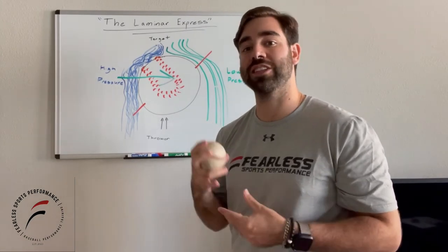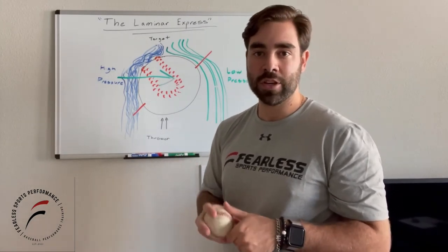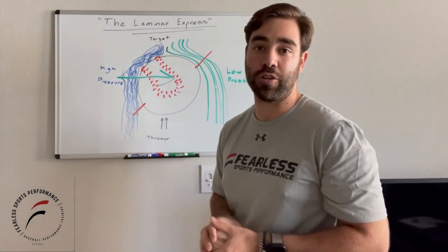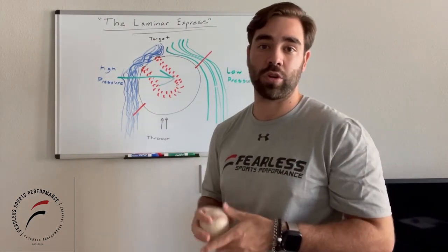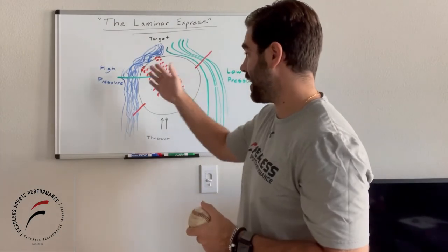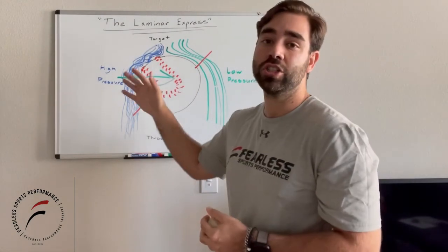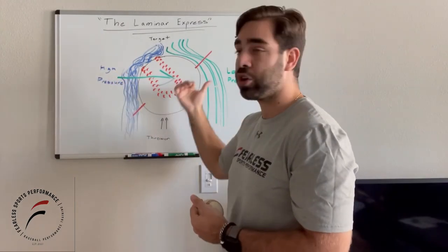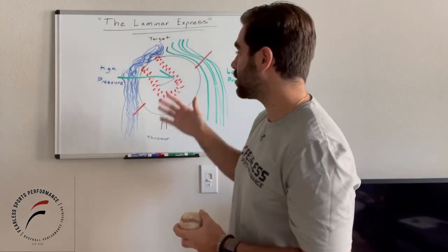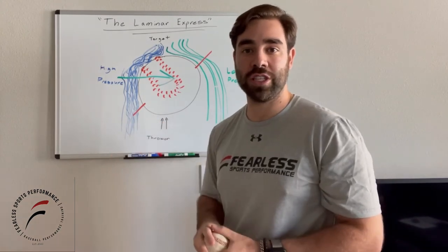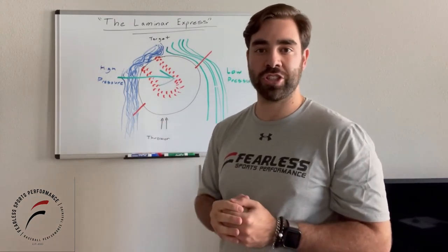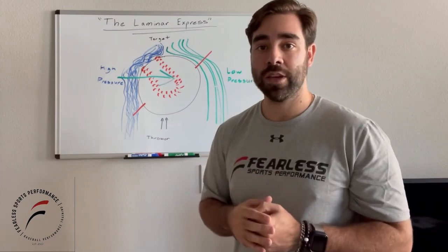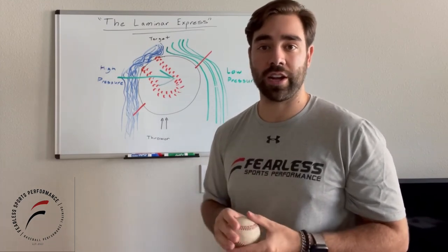When you see those guys that have those nasty two-seams and sinkers, a lot of times it's actually coming from the laminar airflow — that laminar express that we're getting. That turbulent airflow versus laminar airflow is pushing because of the high pressure system towards the low pressure system. And that's where we get that big arm-side run with the two-seam. Sometimes this affects other pitches, but we most frequently and most predominantly see it in the two-seam and sinker.